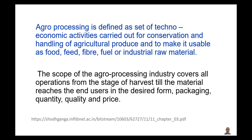The scope of the agro-processing industry covers all operations from the stage of harvest till the material reaches the end-users in the desired form, packaging, quantity, quality and price. Agro-processing starts from harvest of crop to converting it to the desired product, its packaging with specific quantity, quality and price.